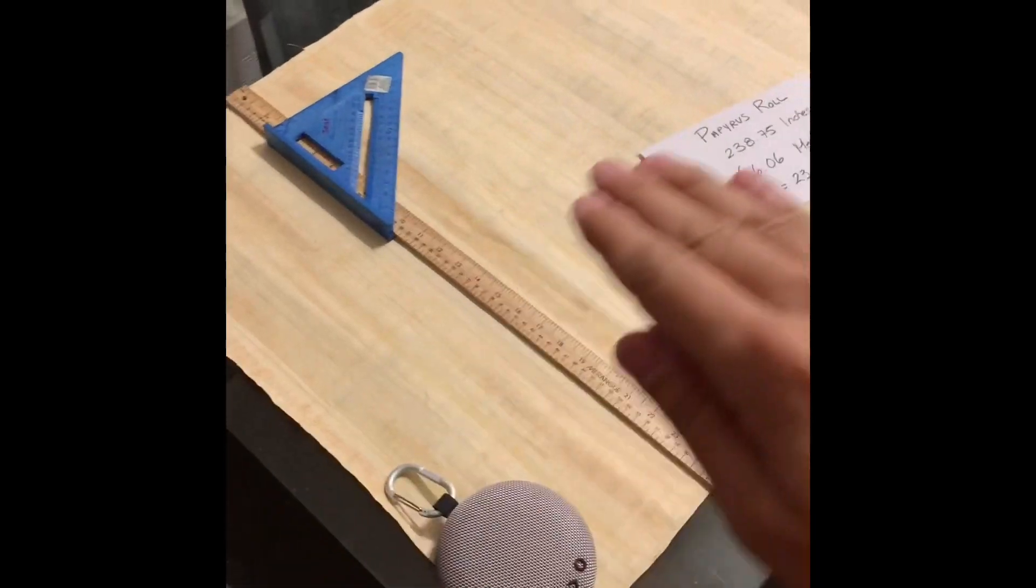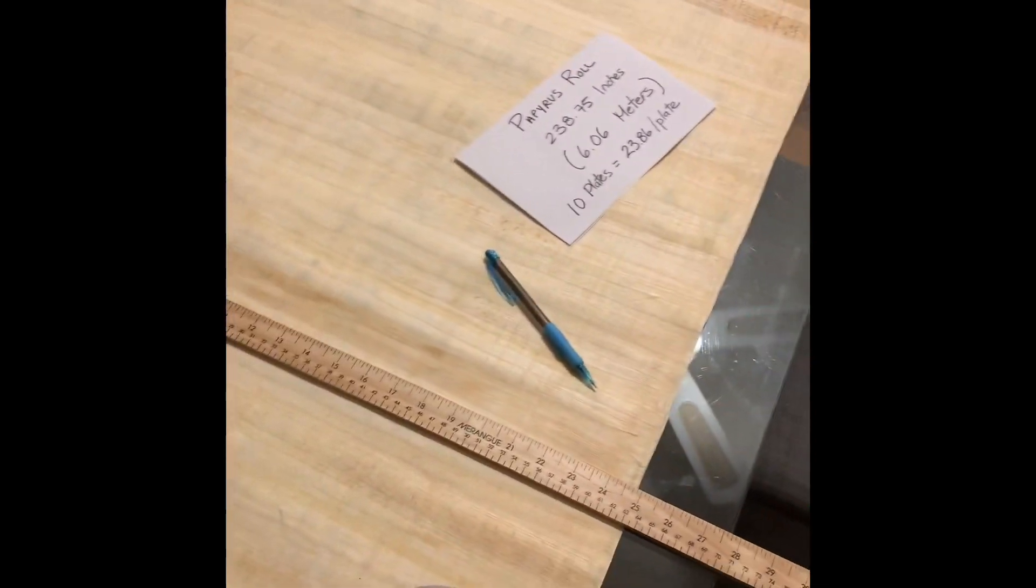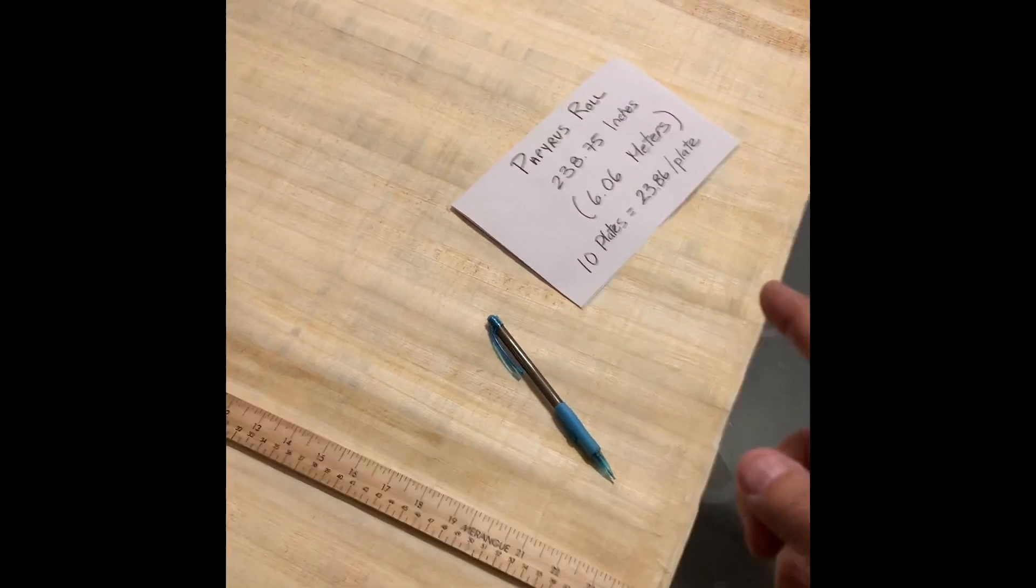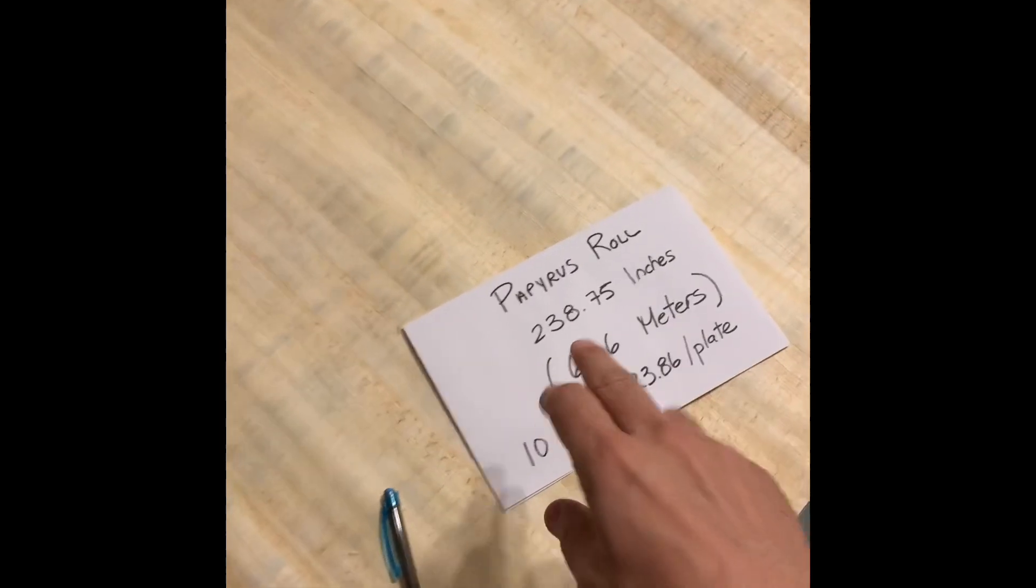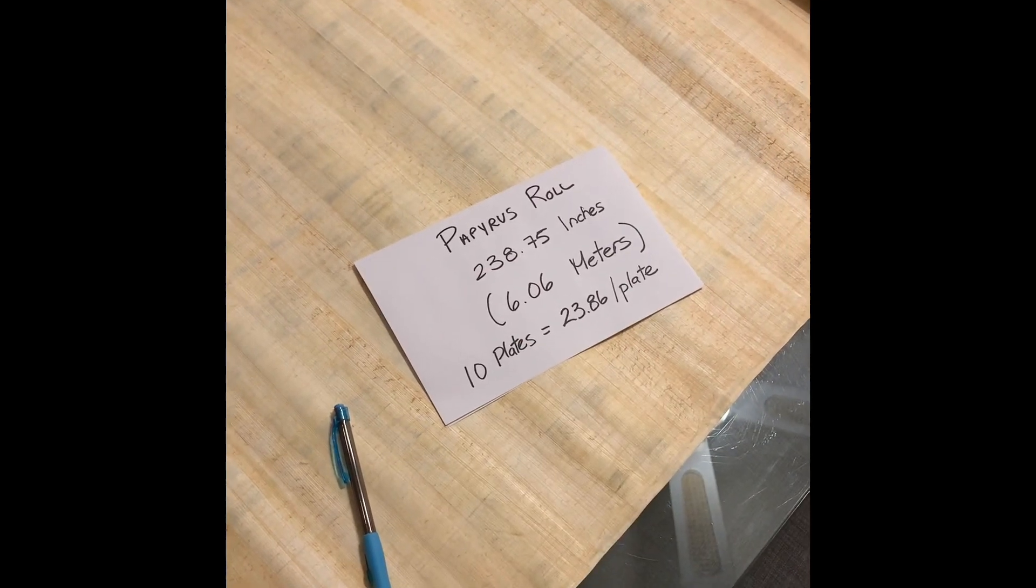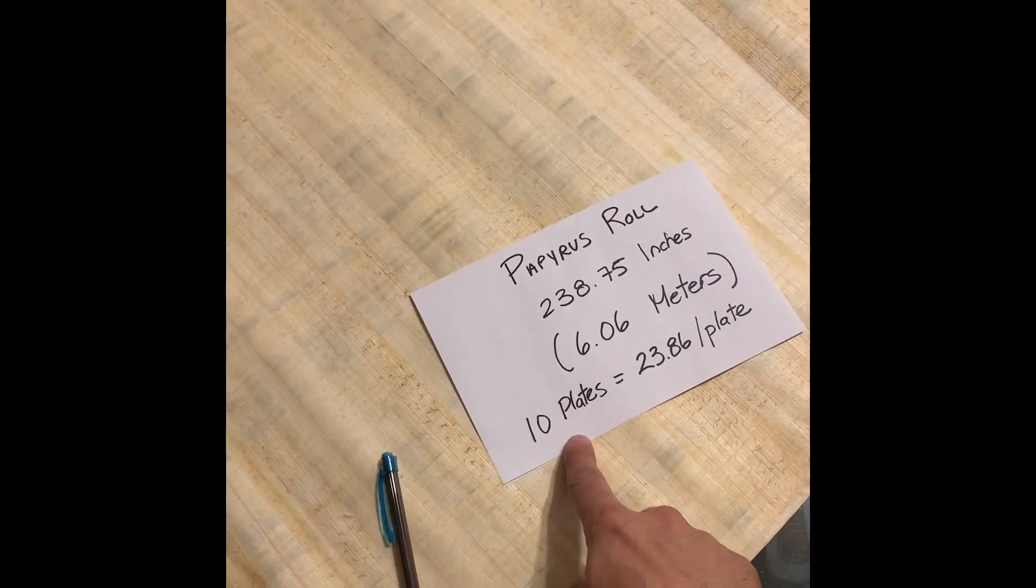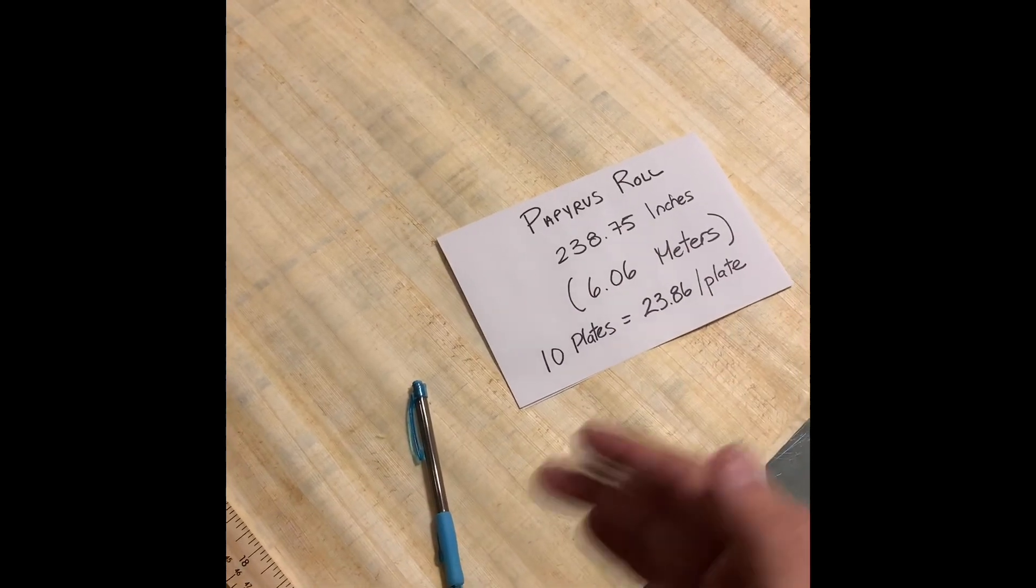What you see here is a large papyrus. I purchased these sheets from Son of the Pharaoh. It's about 70 centimeters by 100 centimeters, and I glued it all together. There are about seven sheets. This now measures six meters, so about 238.75 inches. My goal is to make 10 plates, which is about 23.6 inches each plate, so about two feet each plate.